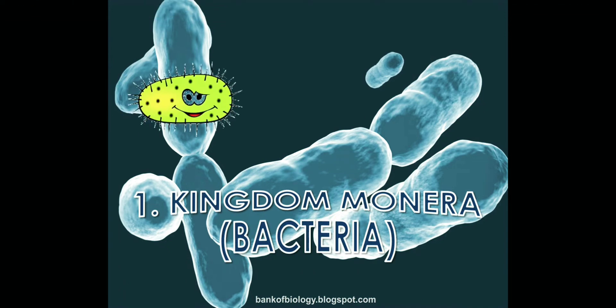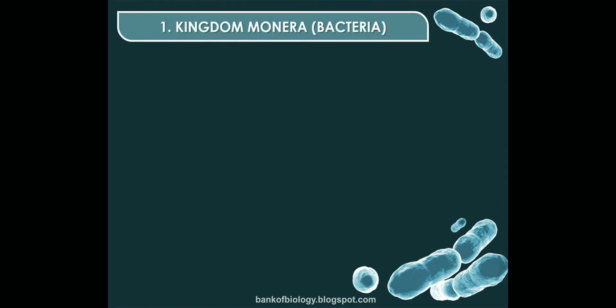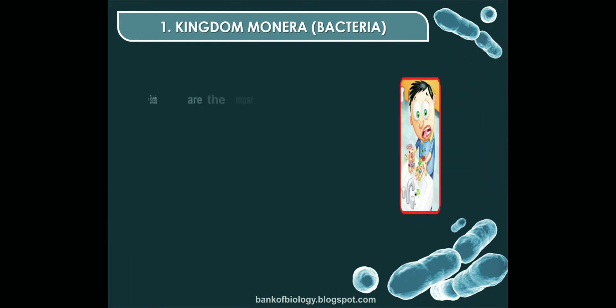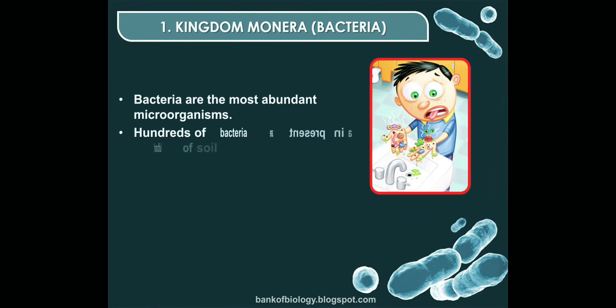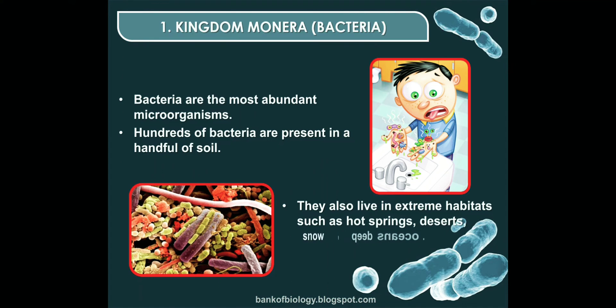Kingdom Monera basically consists of bacteria. There are various types of bacteria in kingdom Monera. In our hands, there are millions of bacteria present. Bacteria are the most abundant microorganism, present everywhere. In a handful of soil, there are hundreds of bacteria present.